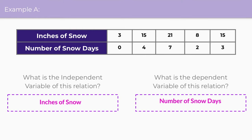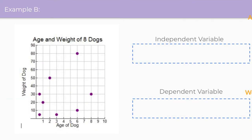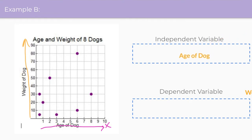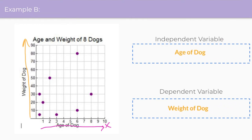Now let's look at example B, which has a graph about the age and weight of eight dogs, and we need to identify the independent and dependent variable. On a graph it's easier because we have an x-axis at the bottom going horizontally, and a y-axis going up vertically. We associate x coordinates with the independent variable and y coordinates with the dependent variable. The age of the dog is across the bottom, so that's our independent variable, and the weight of the dog goes up the side, so that is our dependent variable.